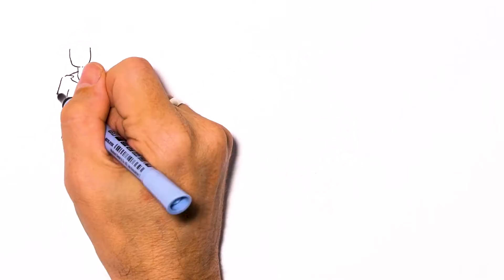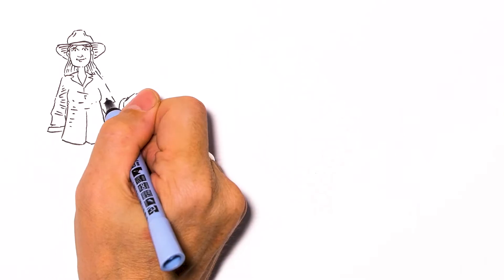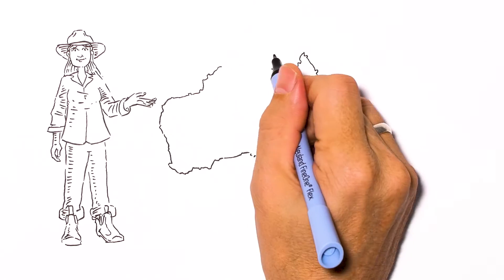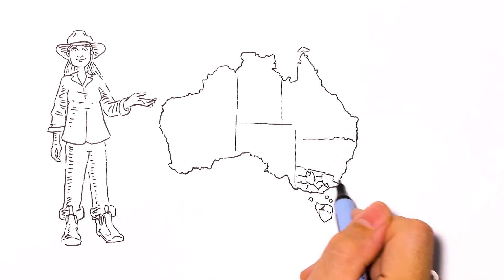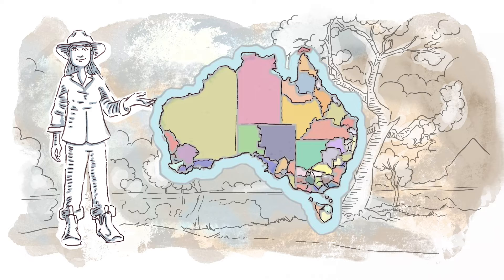Regional NRM organizations are based in regional communities because community is where it happens. Rural, regional, remote, coastal. The organizations are as varied as the landscape they cover, reflecting regional difference, regional needs and landscape diversity.